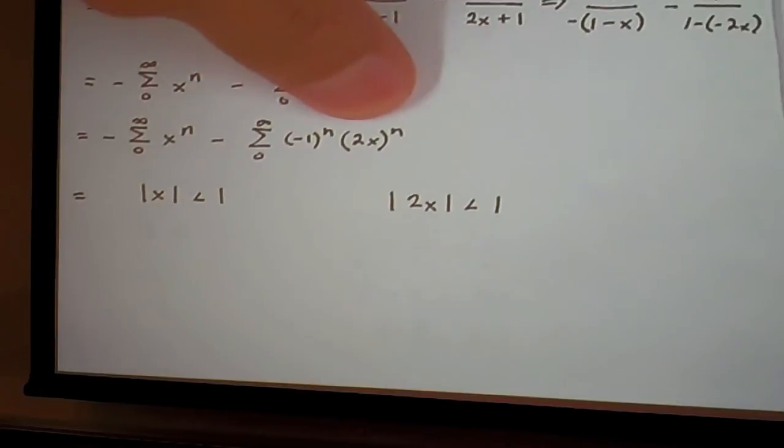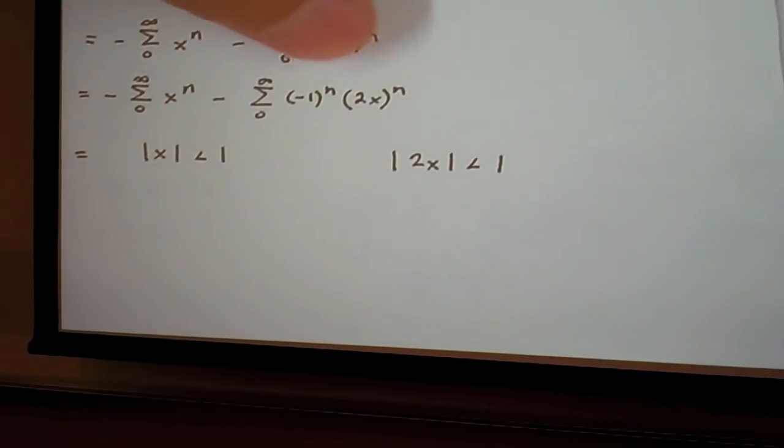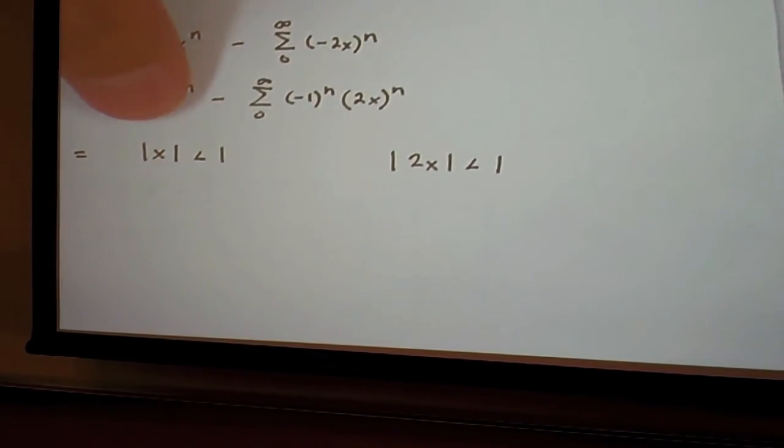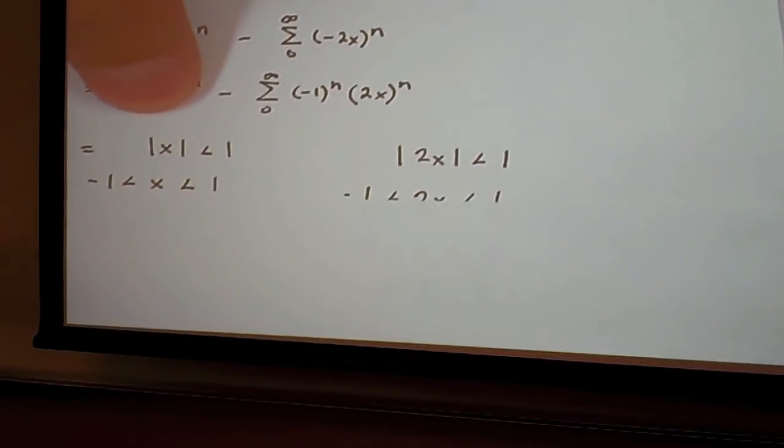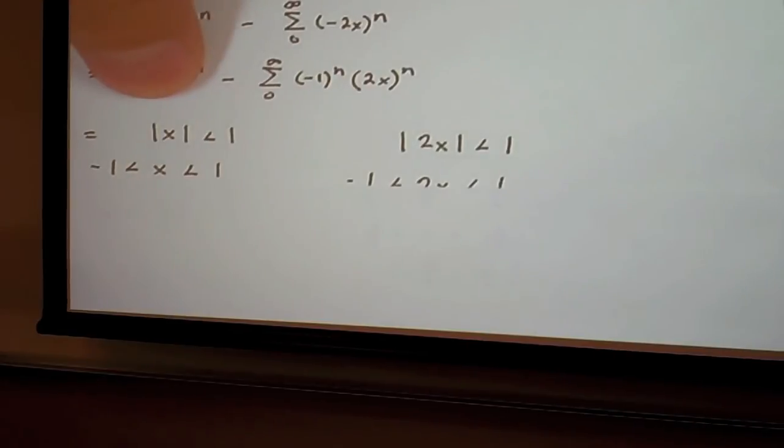And from here we find the interval of convergence. We set the absolute value of x as less than 1 and x would be greater than negative 1 and less than 1.